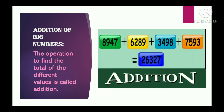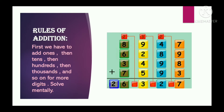Now let us discuss what are the rules of addition. First we have to add ones, then tens, then hundreds, and then thousands, and so on for more digits.